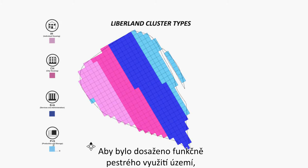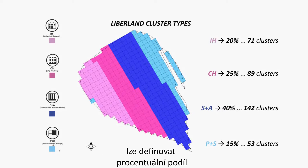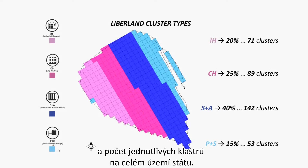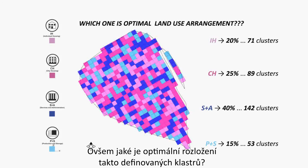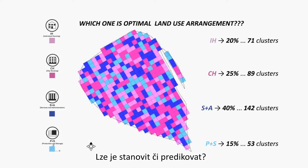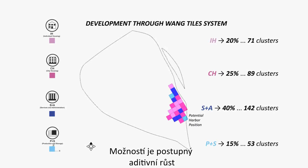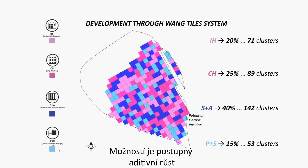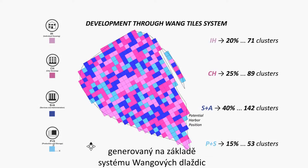In order to achieve spatially varied land use, we can define the percentage and number of clusters throughout the whole country. However, what is the optimal arrangement of these defined clusters, and can we determine or predict it? The possibility is an additive growth generated on the basis of a rank tile system.